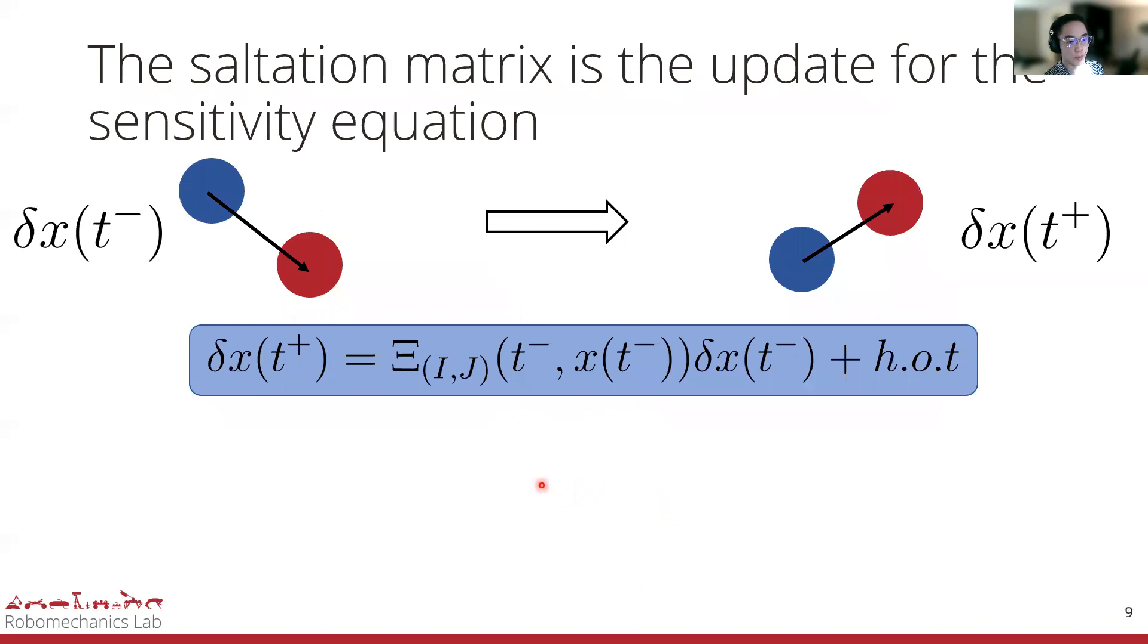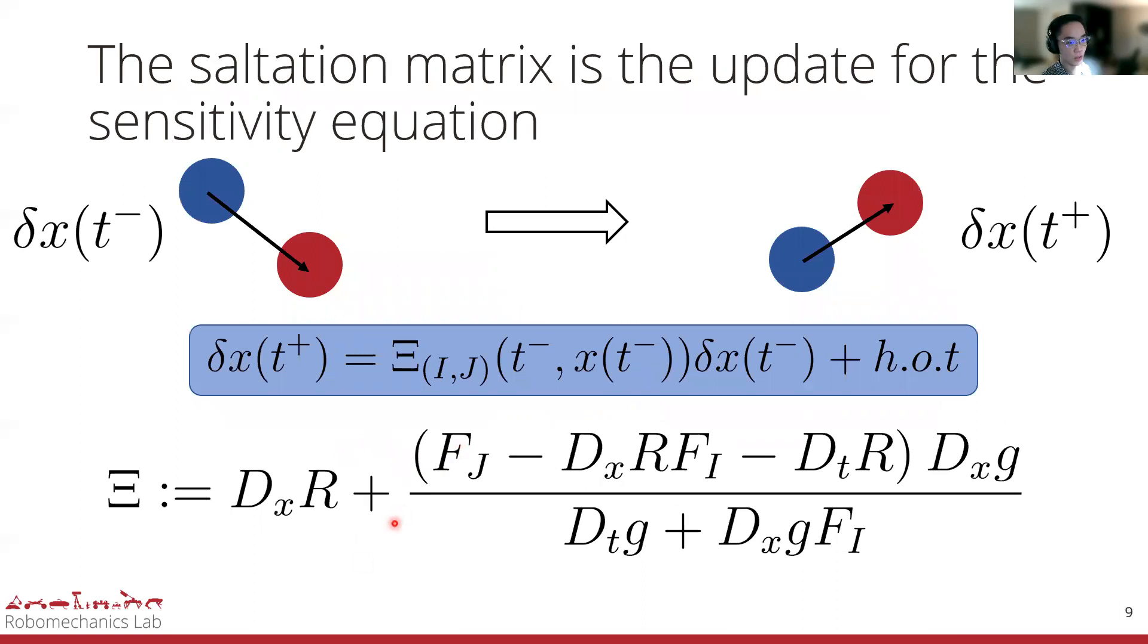This is what the saltation matrix captures. Ultimately, the saltation matrix is the update for the sensitivity equation during a hybrid transition. So what makes up a saltation matrix? It is the Jacobian of the reset map, plus an outer product term that captures the variations in the differing dynamics and in the guard. It is important to note that sometimes the Jacobian of the reset map is used instead of the saltation matrix, but this is generally incorrect. Even though the outer product term only consists of one rank, this difference can be large.